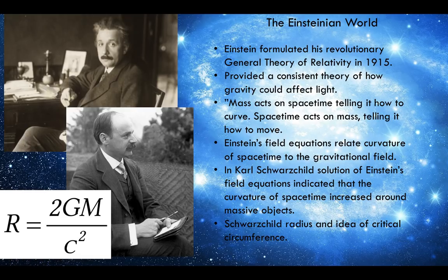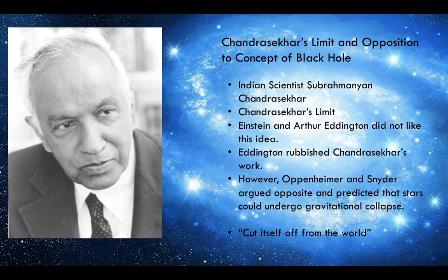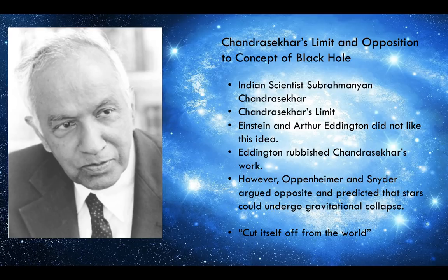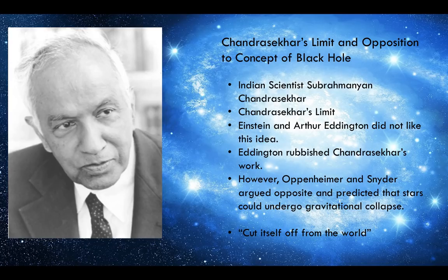Around the same time, the notable Indian scientist Subramanian Chandrasekhar formulated the famous concept of the Chandrasekhar limit, the maximum mass that a star could support itself against its own gravity after it runs out of fusion. Gravitational collapse is prevented by degeneracy pressure, which is the result of the quantum physics of electrons that stars contain. However, Arthur Eddington, who was a major figure in Einsteinian physics at the time, abhorred this idea and rubbished Chandrasekhar's work.